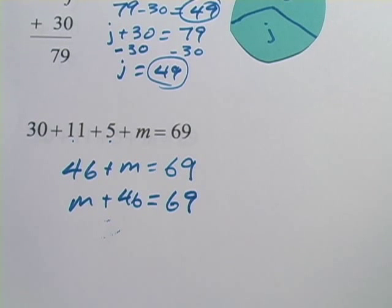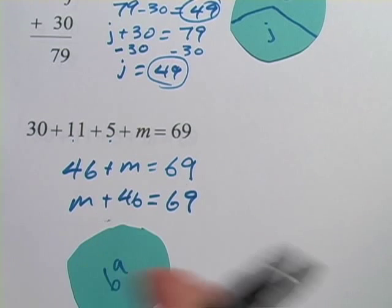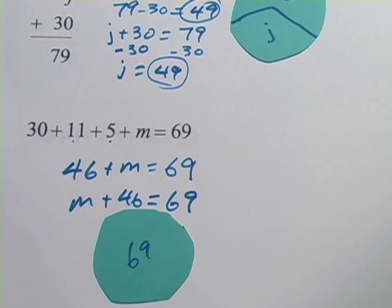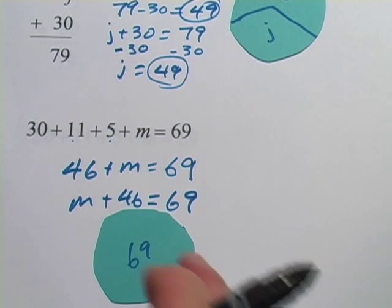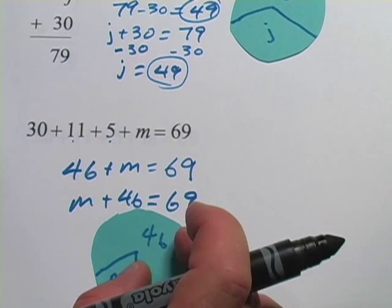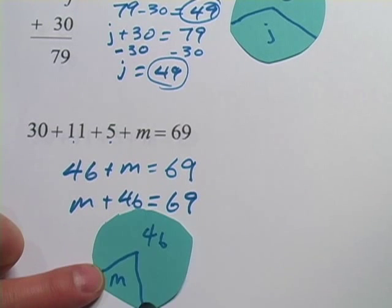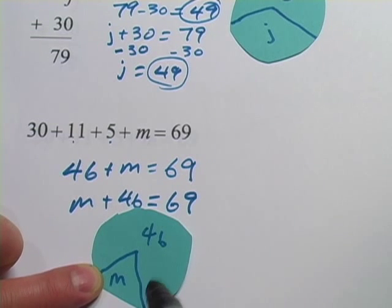And now we'll do this the same way. You can visualize this as the total being 69, the total pie has 69 in it. And then if we want to find m, we have to take away the 46.